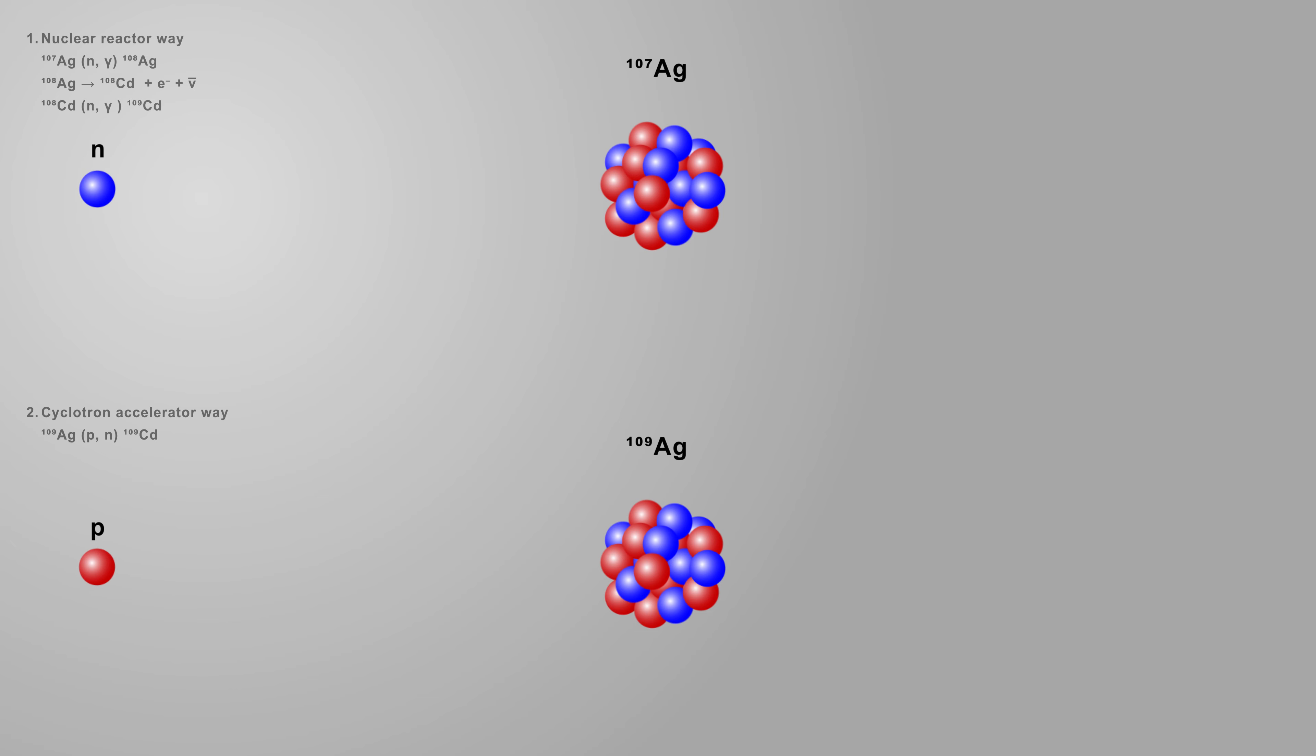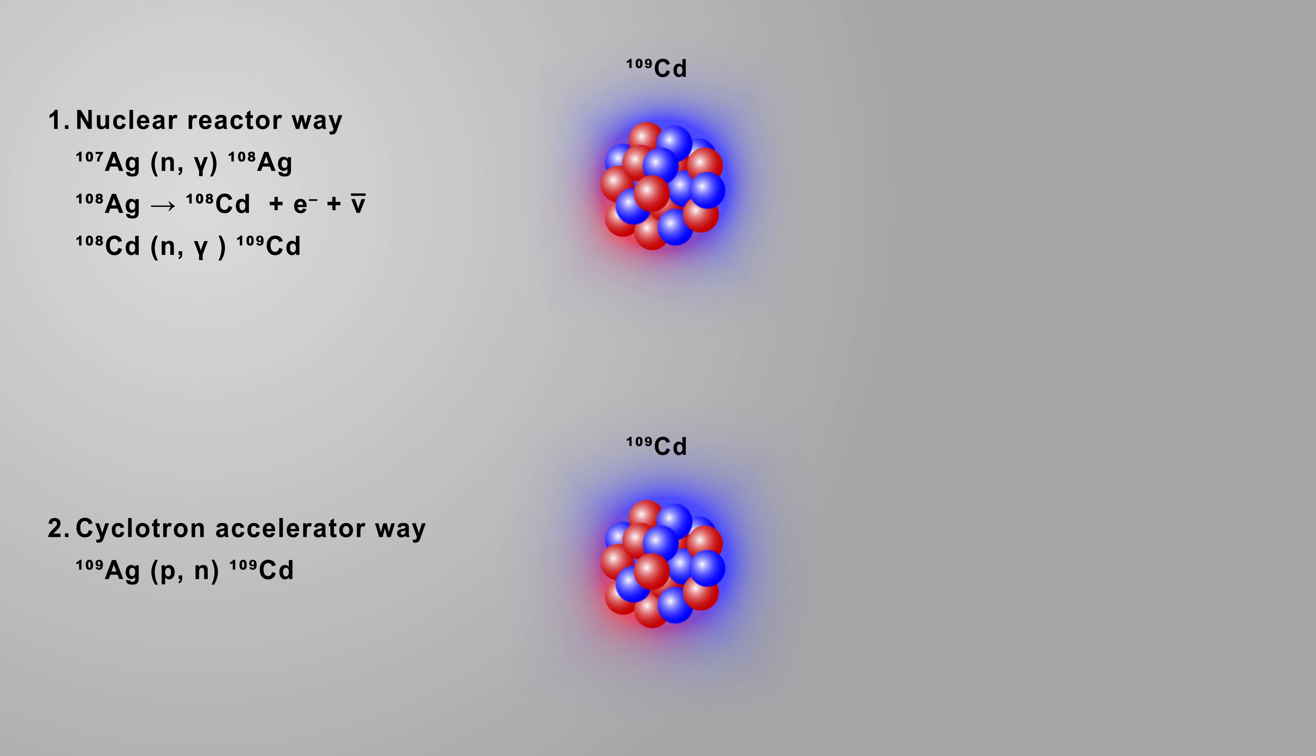Cyclotron-produced cadmium-109 is roughly five times more expensive than its reactor-borne version, but it yields ultra-pure, carrier-free, very high-specific activity radioisotope. This matters a lot when manufacturing a radiation source, allowing for much smaller and much higher output sources.